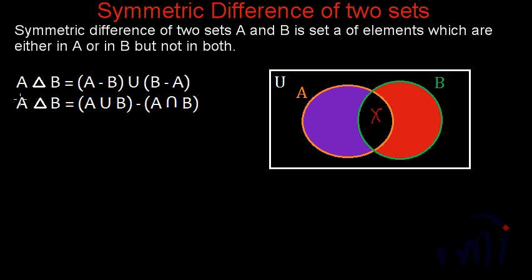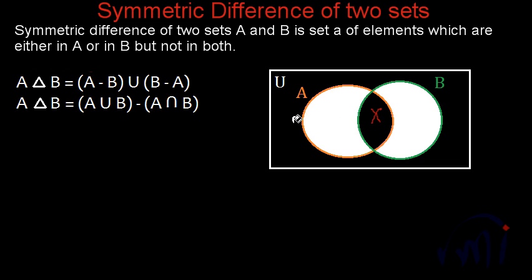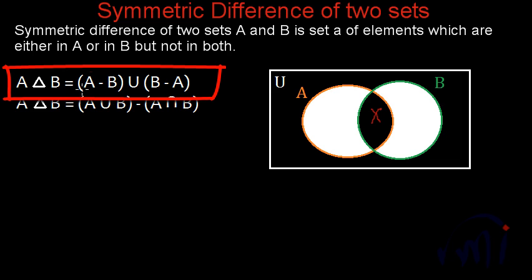The first way: the symmetric difference of A and B is equal to A minus B — the elements of A which are not in B — union B minus A — the elements of B which are not in A. Together these two represent A△B, the symmetric difference of A and B, so A△B = (A - B) ∪ (B - A).